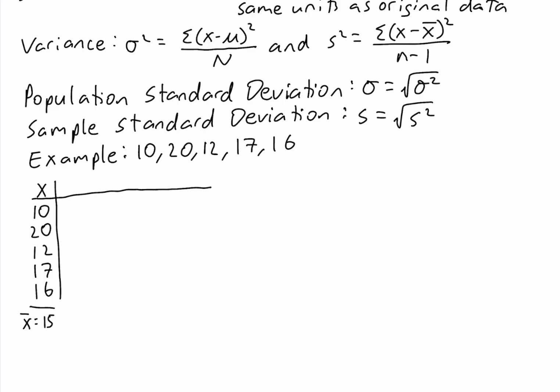In the second column we're going to have the deviations about the mean, x minus x-bar. 10 minus 15 is negative 5. 20 minus 15 is 5. 12 minus 15 is negative 3. 17 minus 15 is 2, and 16 minus 15 is 1. Now the sum of the deviations about the mean is always going to be equal to 0, so the sum of this column is 0.